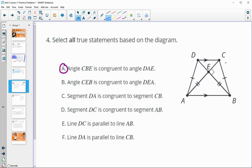Angle CEB, so this right angle here is congruent to DEA, this angle here, and that's true because they're vertical angles. So, segment DA, so this one here, is congruent to CB, and that's true. We can see it marked on the diagram. Segment DC is congruent to segment AB, that is false. Those arrows mean that they are parallel, so E is true. And then line DA is parallel to, so this one is parallel to this one, that is false.